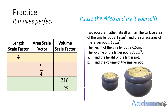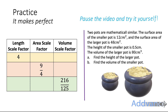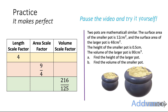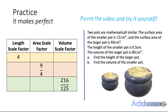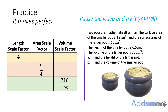On the right of the screen is a real exam-style question. Two pots are mathematically similar. The surface area of the smaller pot is 12 cm squared and the surface area of the larger pot is 48 cm squared. The height of the smaller pot is 7.5 cm and the volume of the larger pot is 80 cm cubed. Find the height of the larger pot, and find the volume of the smaller pot. Pause the video and try both questions yourself.